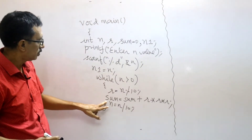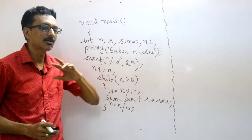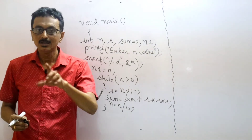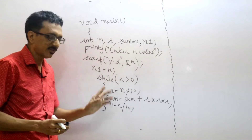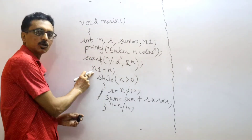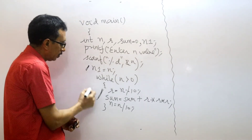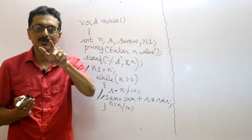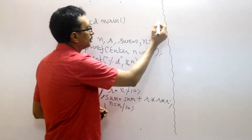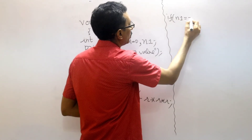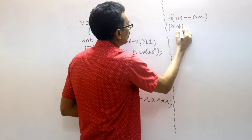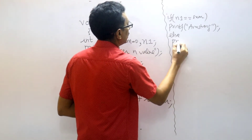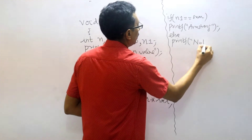We need to store the original n in a variable n1 before the loop runs, so that after the loop we can compare sum with n1. If n1 is equal to sum, printf 'Armstrong'; else printf 'not Armstrong'. That's all.